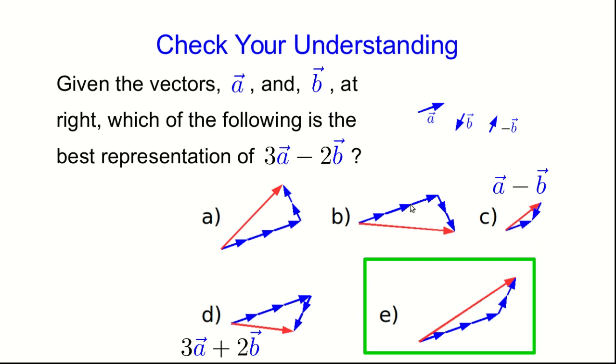a and b have nothing to do with 3a minus 2b because these vectors are neither b nor negative b. They're an incorrect attempt to flip b end for end.